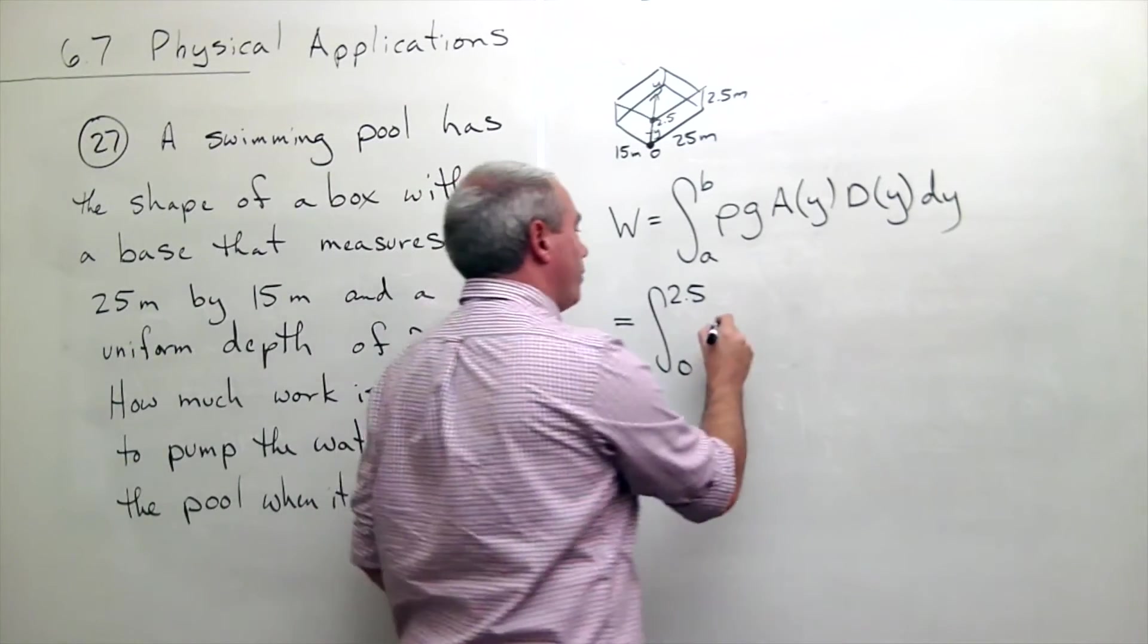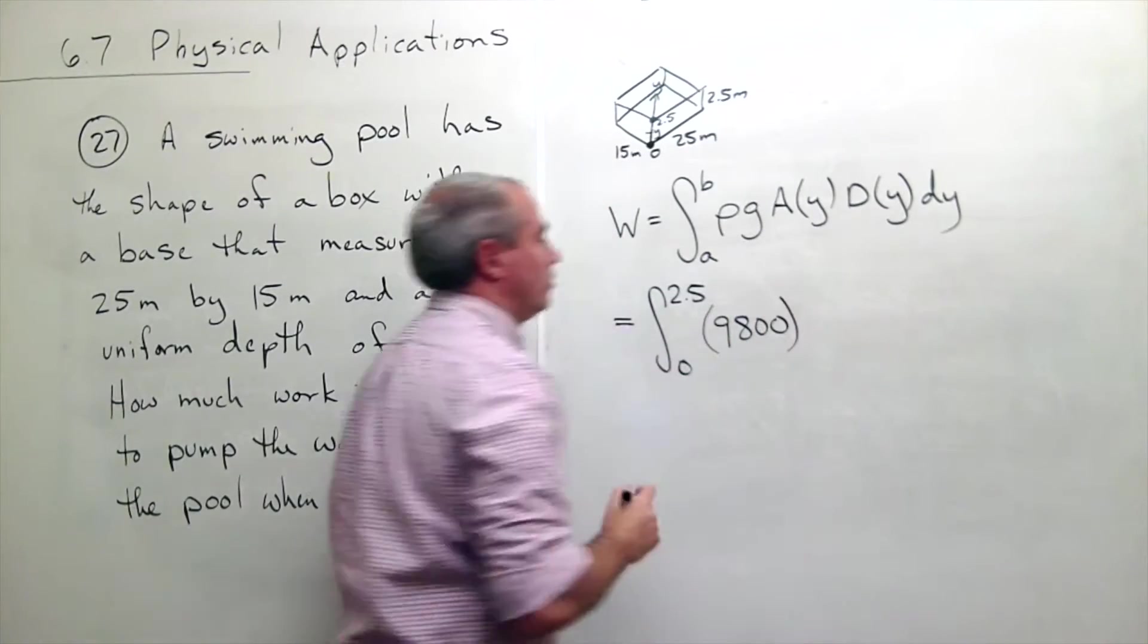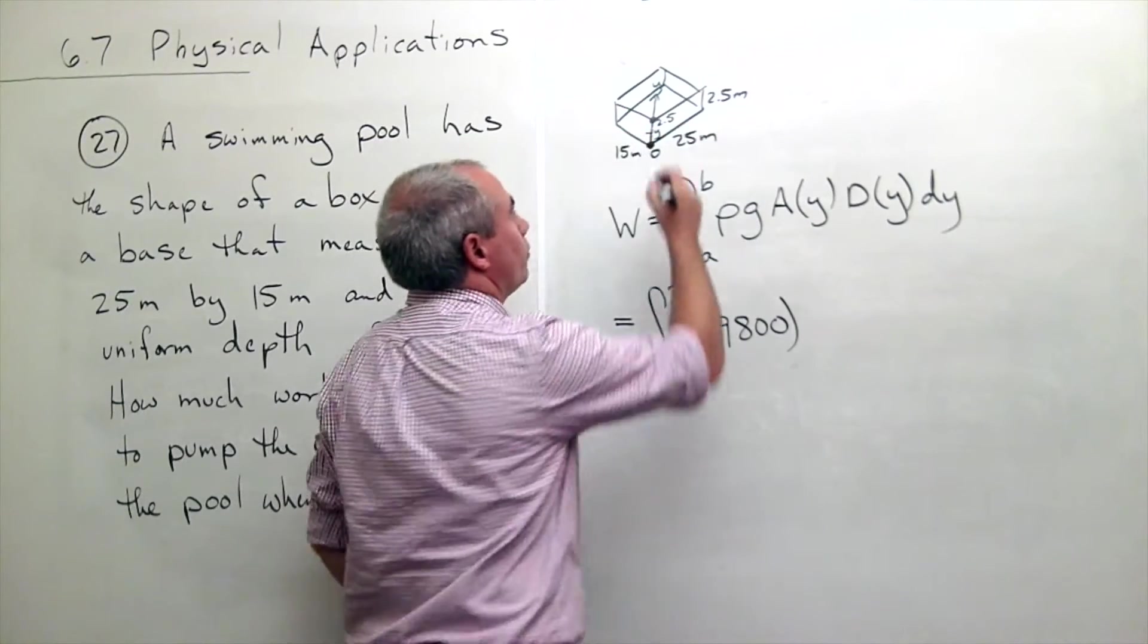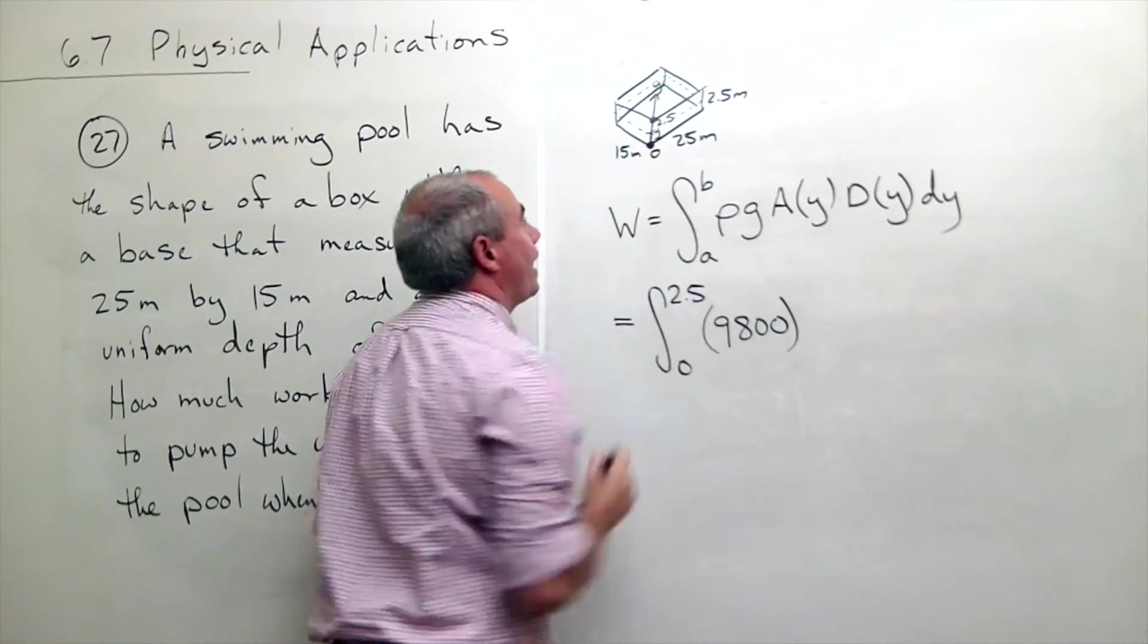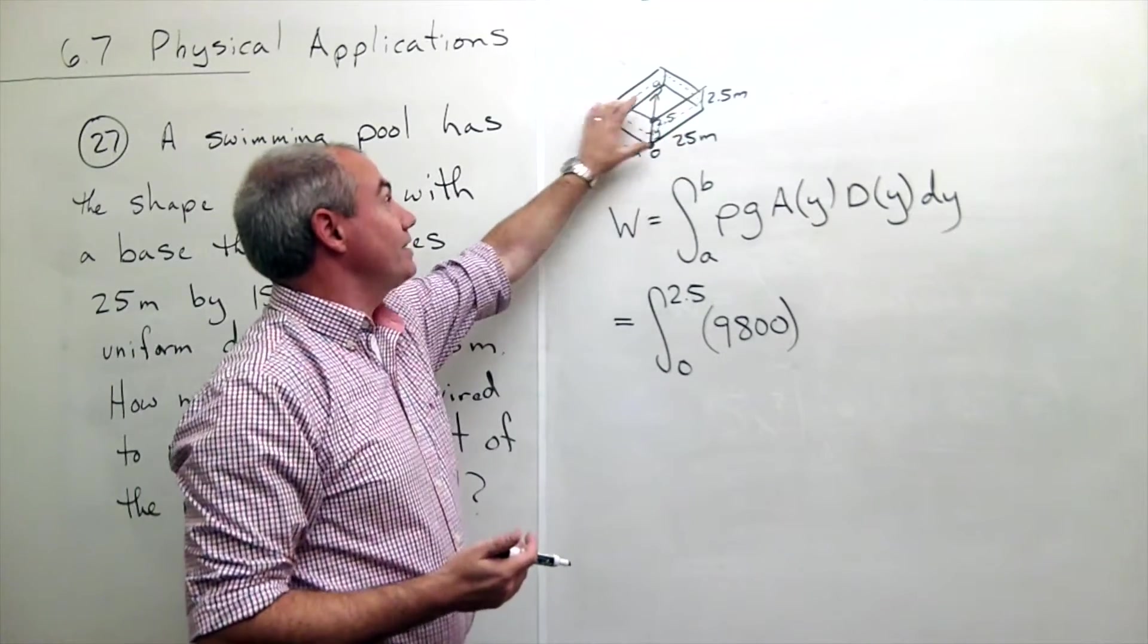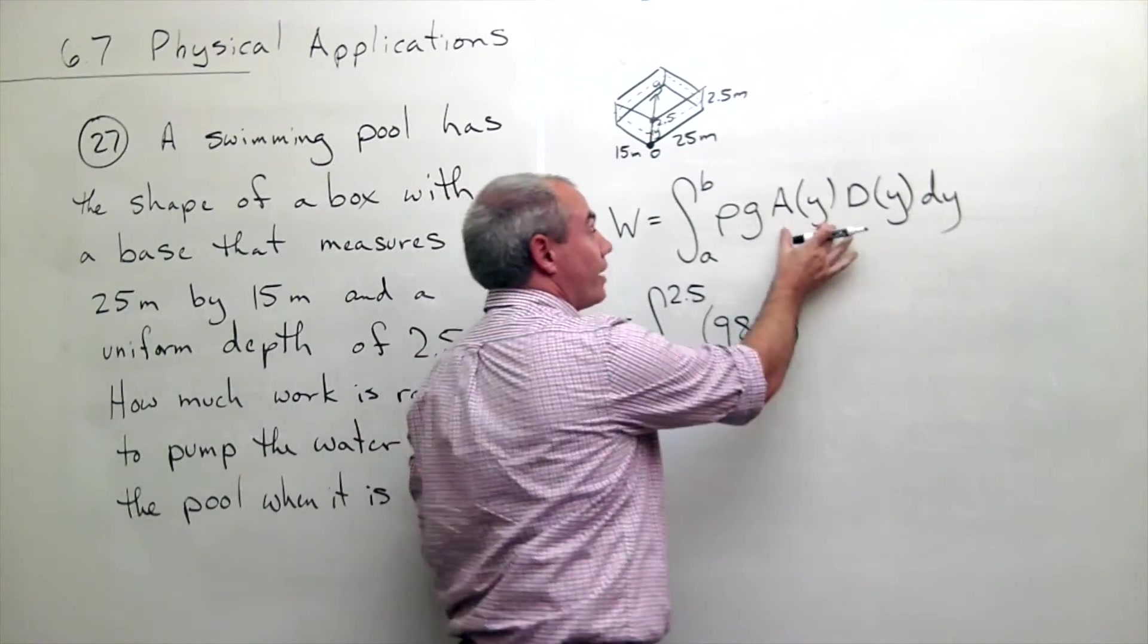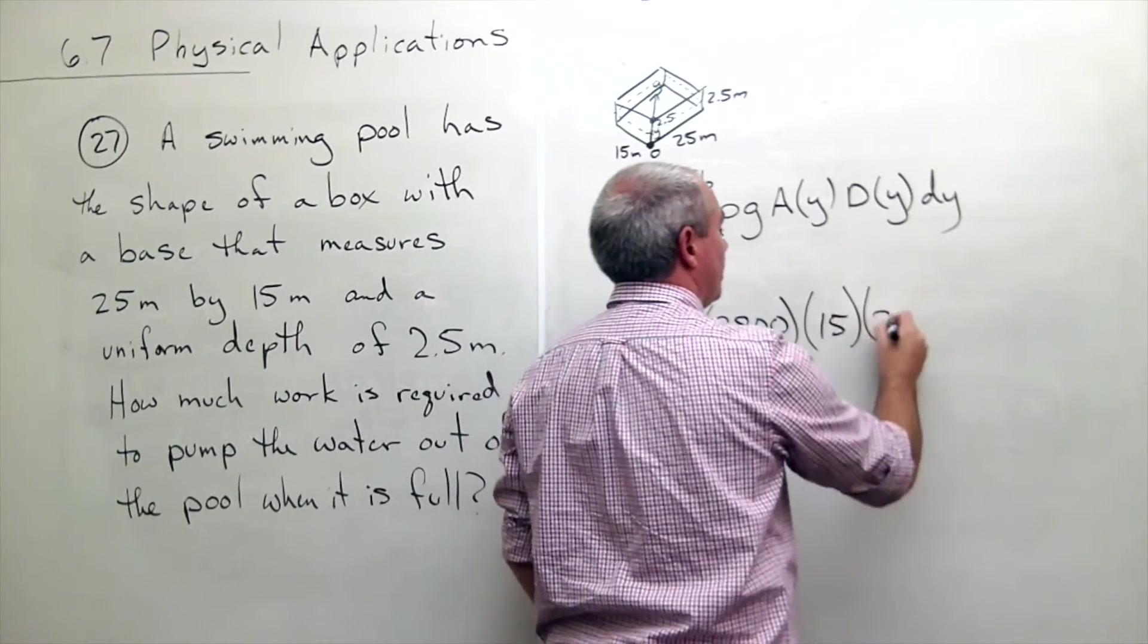The weight density of water we know is 9800. Then I need to say, well what's the area when I'm at a depth of y? In other words, if I take a cross section of the pool at y, what's the area of that cross section? And it's just the rectangle. Okay, so that rectangle right there, that's the dotted line, is 15 by 25. So that is the area, the cross sectional area at y. So that's 15 times 25.